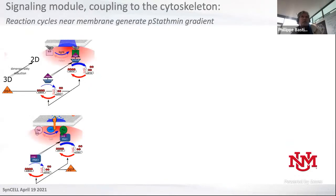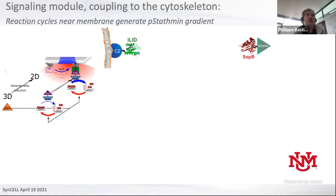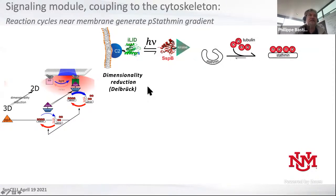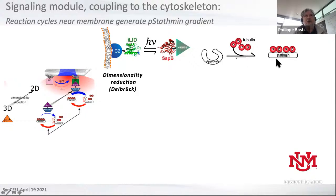That's all fine, but this doesn't do anything to the cytoskeleton. We have to couple that system to something that affects the cytoskeleton. So first, as I already explained, is this dimensionality reduction, which was described decades ago by Delbrück as a fundamental feature of how you can activate systems in living systems. We do this with light instead of morphogens. But the idea is that we somehow affect this microtubule regulator.